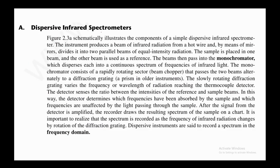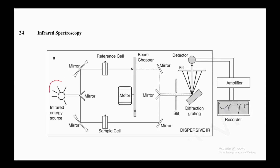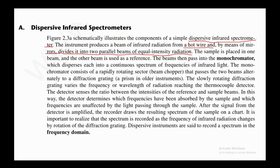Let's discuss dispersive infrared spectrophotometers first. Figure 2.3 systematically illustrates the components of a simple dispersive infrared spectrophotometer. The instrument produces a beam of infrared radiation from a hot wire, and by means of mirrors divides it into two parallel beams of equal intensity. One beam passes through the sample and the other beam is used as a reference.